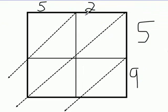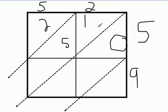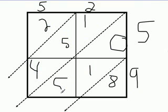Now we want to do 2 times 5 which equals 10, 5 times 5 which equals 25, 2 times 9 which equals 18, 5 times 9 equals 45.